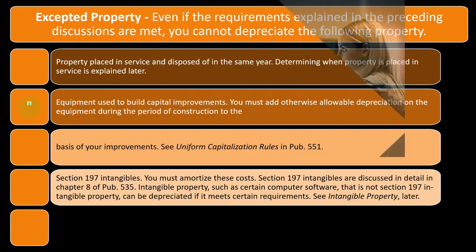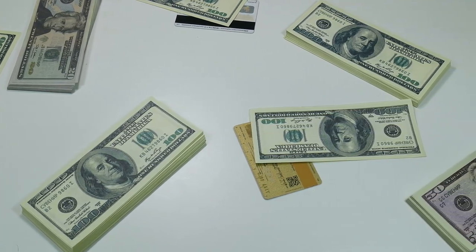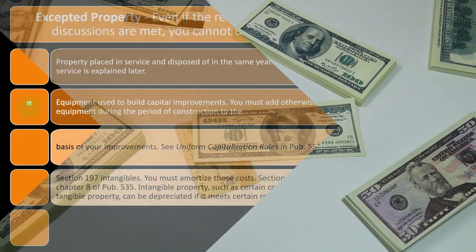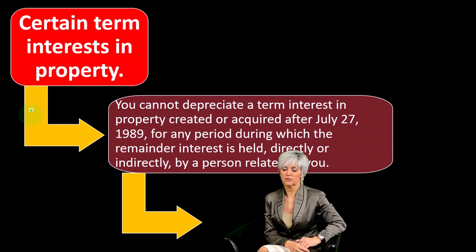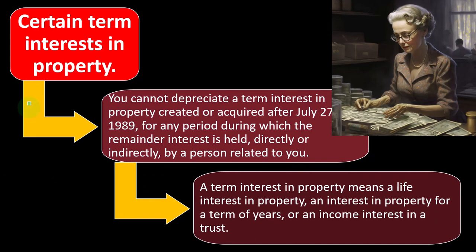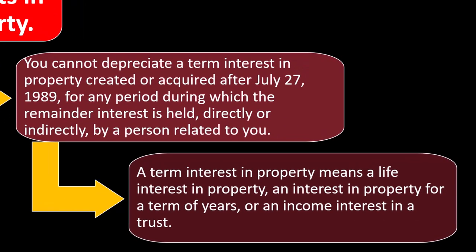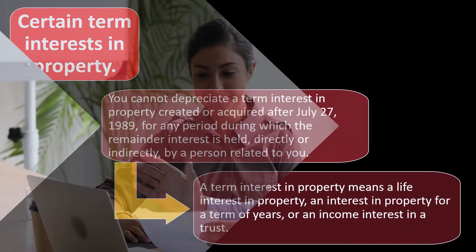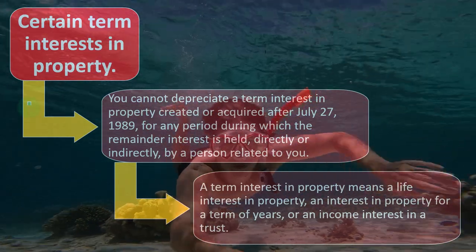Intangible property has value but is not tangible — you can't touch it. Certain term interests in property: you cannot depreciate a term interest in property created or acquired after July 27th, 1989, for any period during which the remainder interest is held directly or indirectly by a person related to you. A term interest in property means a life interest in property, an interest in property for a term of years, or an income interest in trust. This creates some complexity around ownership and the related depreciation rules.